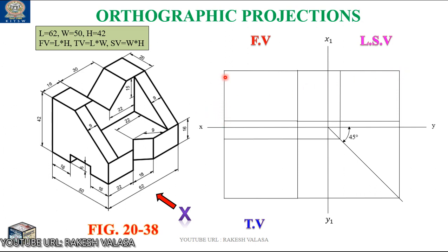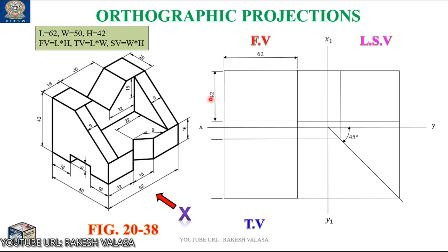You need to construct front view features — front view visible or invisible portions — only in this front view rectangle box. Similarly, you can fit top view features, top view edges, or top view hidden portions in this top view rectangle box. Similarly, you need to fit or construct or draw side view features in this side view rectangle box. Now give the dimensions: the full length is 62 mm, width is 42 mm, length is 62 mm, height is 42 mm, and width is 50 mm.